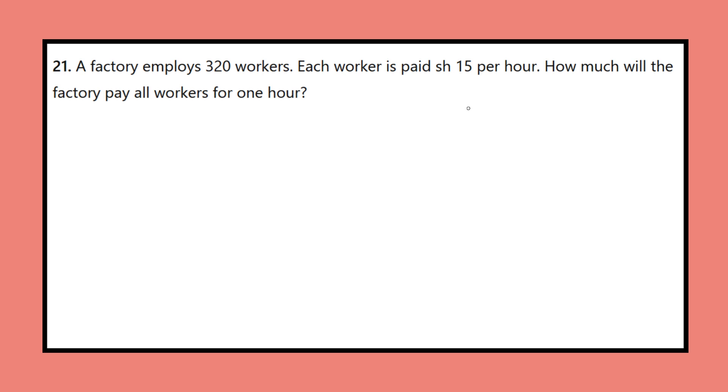Question 21: A factory employs 320 workers. Each worker is paid SH-15 per hour. How much will the factory pay all workers for one hour?